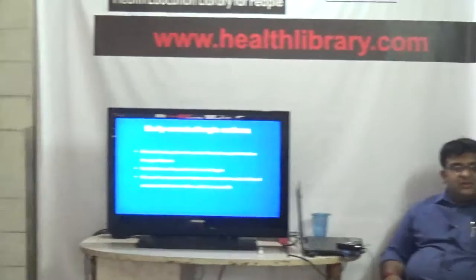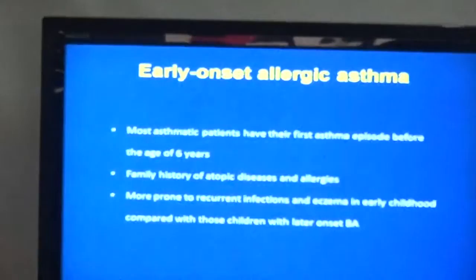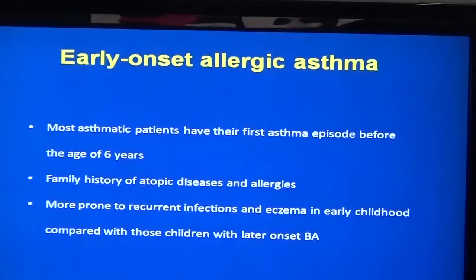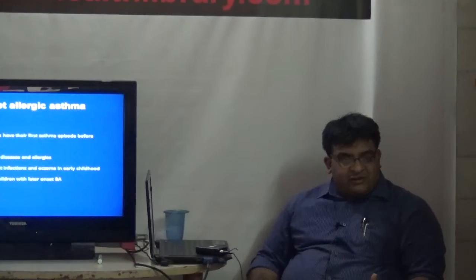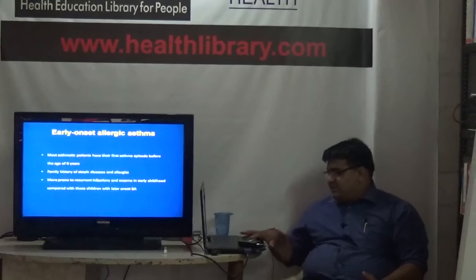Early onset allergic asthma most commonly starts in childhood, before the age of six years, with symptoms of breathlessness, wheezing, and increased cough. These patients usually have a family history of allergies and asthma at home. They are more prone to recurrent respiratory tract infections and skin allergies such as eczema.